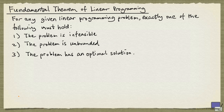The fundamental theorem of linear programming states the following. For any given linear programming problem, exactly one of the following must hold: the problem is infeasible, the problem is unbounded, or the problem has an optimal solution. We're going to prove this theorem by showing that if the problem is not infeasible and is not unbounded, then the problem has an optimal solution.